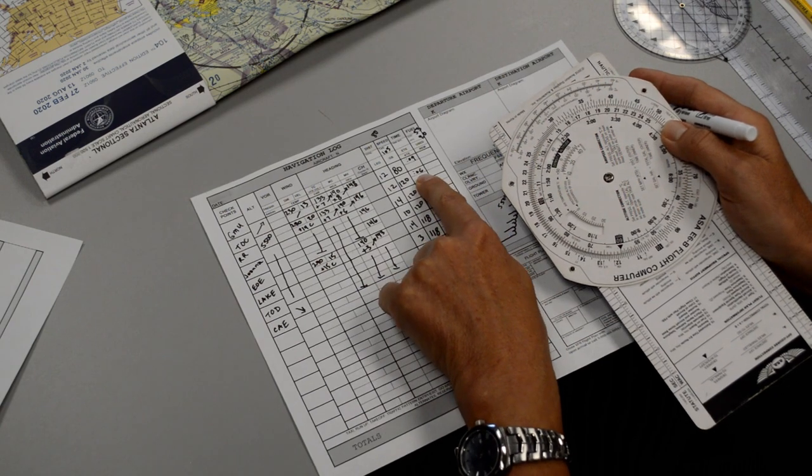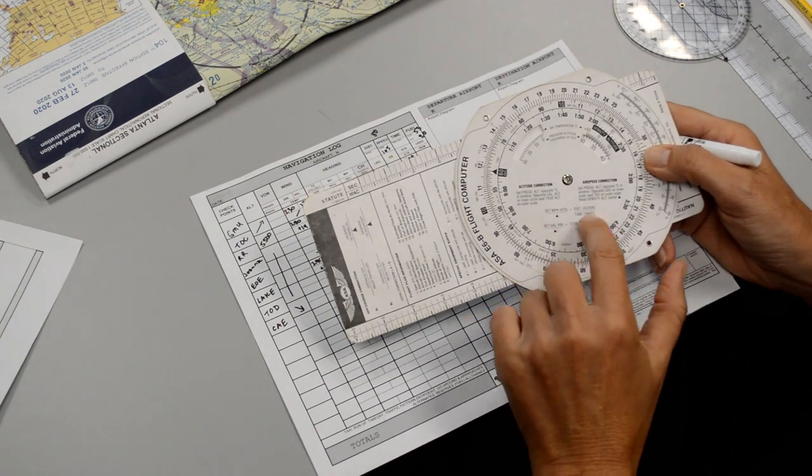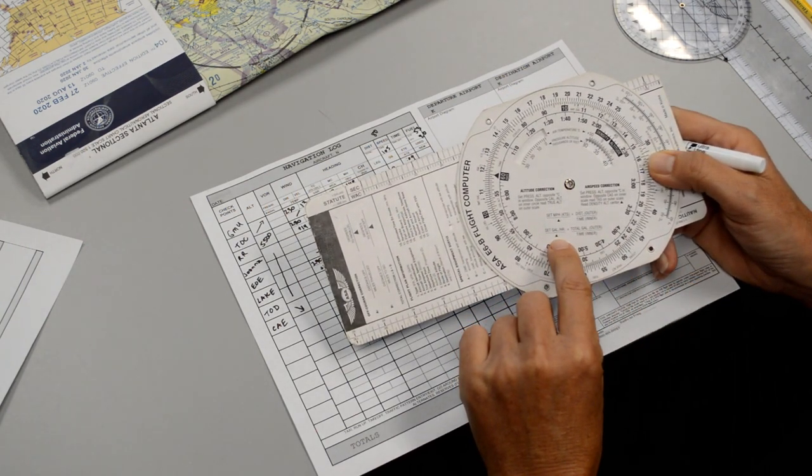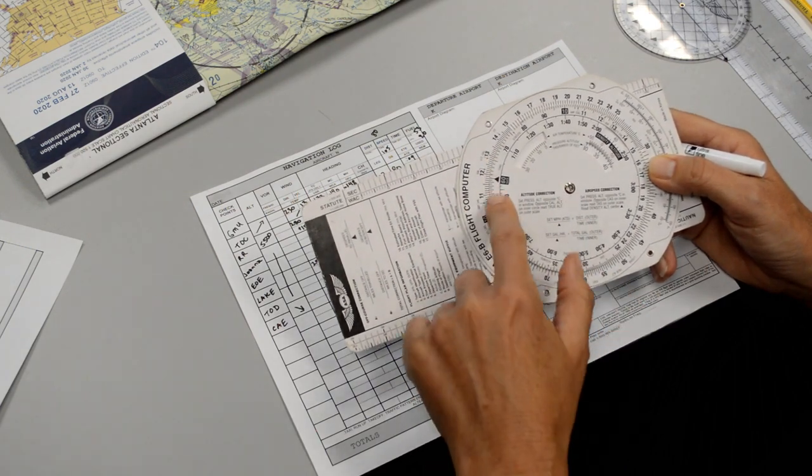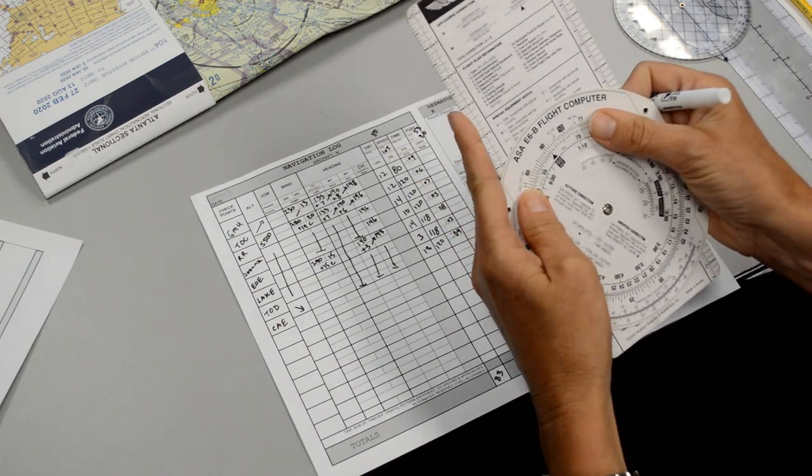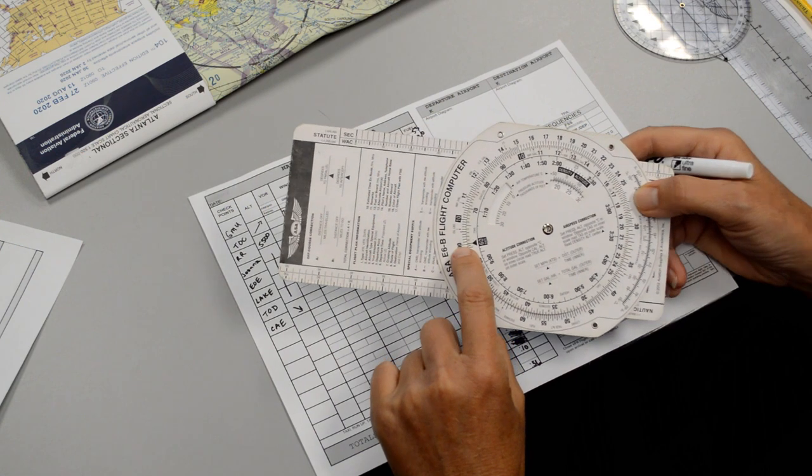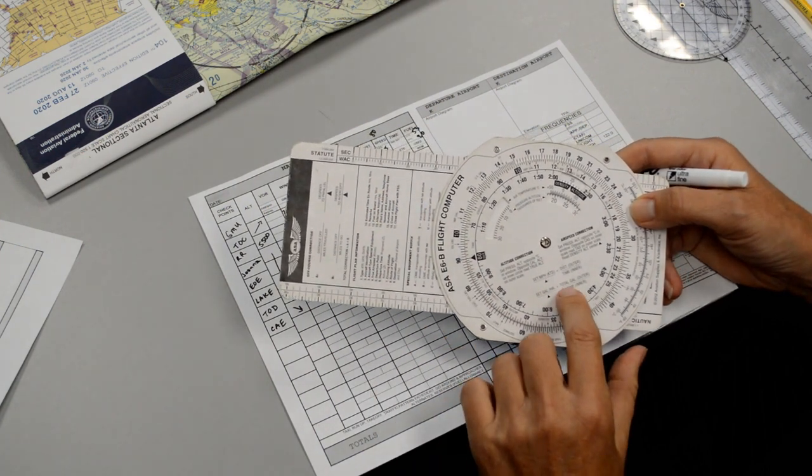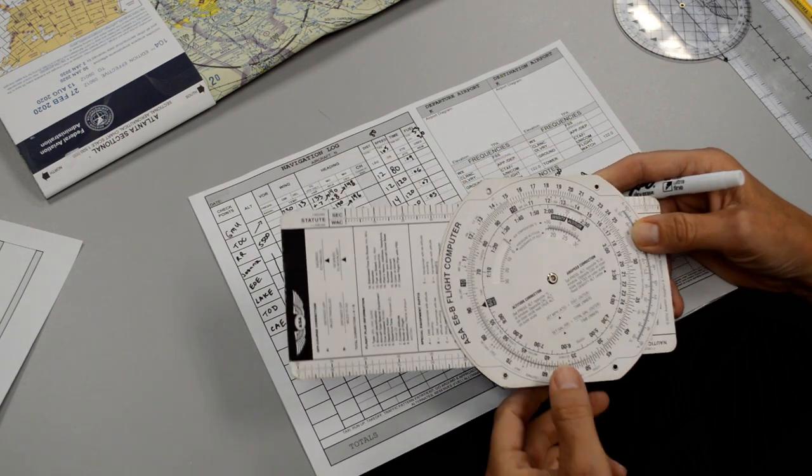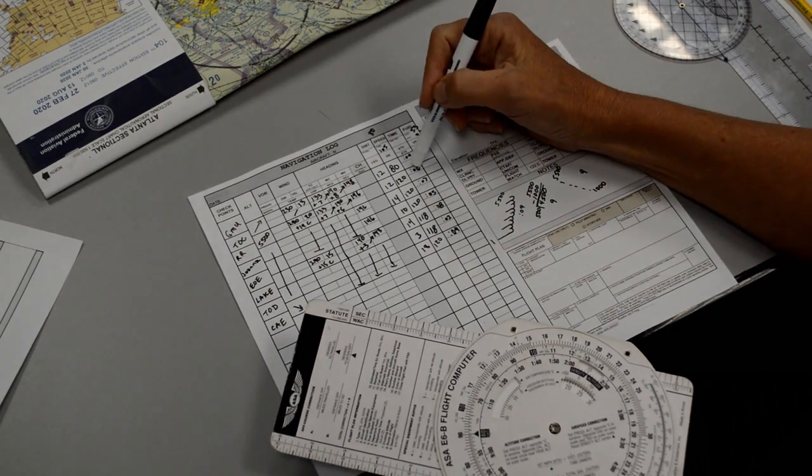It says that we're going to burn 9 gallons an hour for cruise, so we're going to use this second formula and it says to set the pointer to our gallons per hour. So I need to make the pointer point to something that would represent 9. So this 90 will work. So we're pointing at 9 gallons per hour and then it says total gallons and then time. So if we burn 9 gallons an hour for 6 minutes...